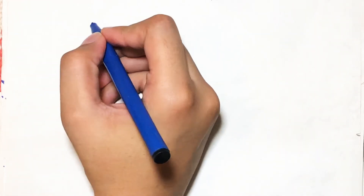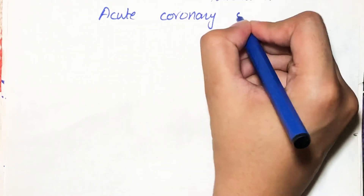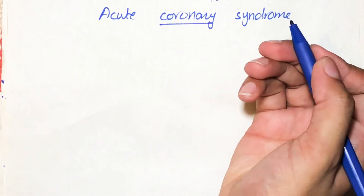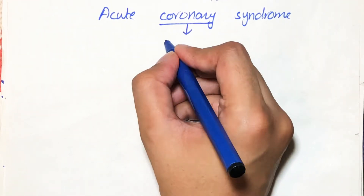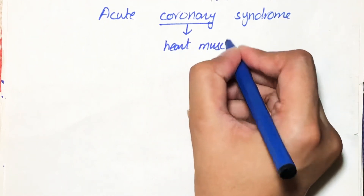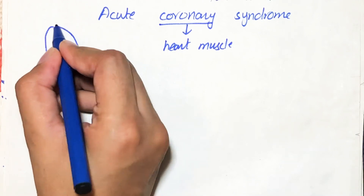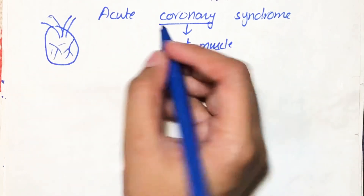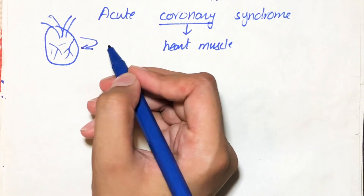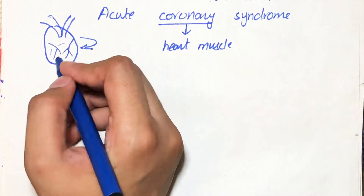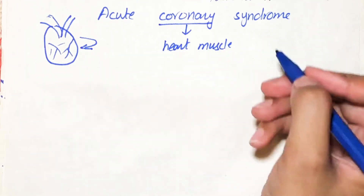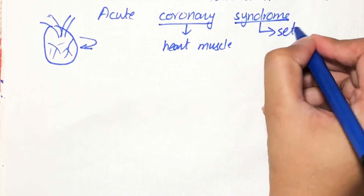Today let's talk about acute coronary syndrome. As its name indicates, it is something related to the coronary artery, which supplies blood to the heart muscles. The heart itself is a pumping organ that provides oxygen to the whole body through blood, but for the pumping activity it also needs oxygen through blood supply. So the heart pumps blood to itself just to provide oxygen to its own muscles for the pumping activity. Syndrome means a set of symptoms associated with a specific health-related cause.